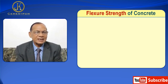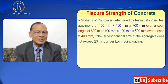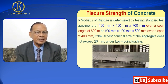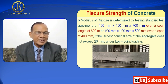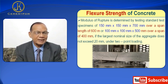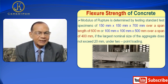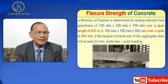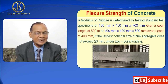The modulus of rupture (MR) is determined by testing a standard test specimen of 150 mm × 150 mm × 700 mm over a span length of 600 mm, or 100 mm × 100 mm × 500 mm over a span of 500 mm, if the largest nominal size of the aggregate does not exceed 20 mm, under two-point loading.